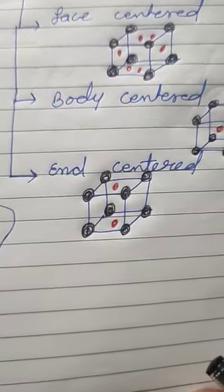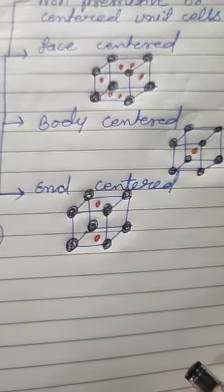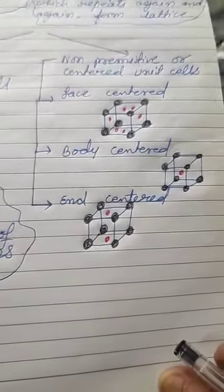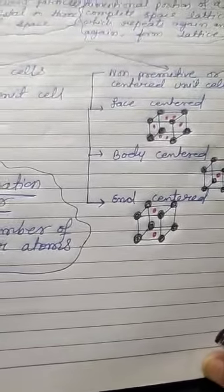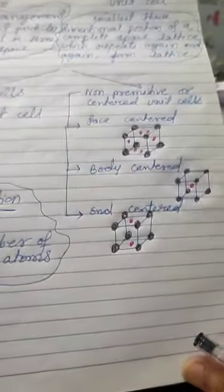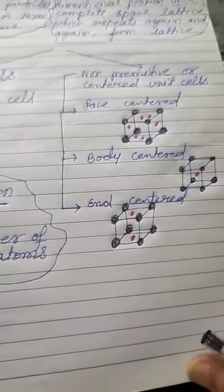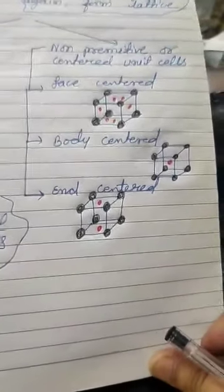Third one is end centered. Same theory - eight particles at the eight corners. Now what about new? We have to see only at the roof or at the floor, I have drawn two points. That means any of the two opposite faces. If one is at the front side wall, then the other will be at the back side. One is on the right hand side wall, then the other is on the left hand wall. That's why I have just chose here roof and floor, at the top and at the bottom. Two particles are there. It is considered as end centered unit cell.